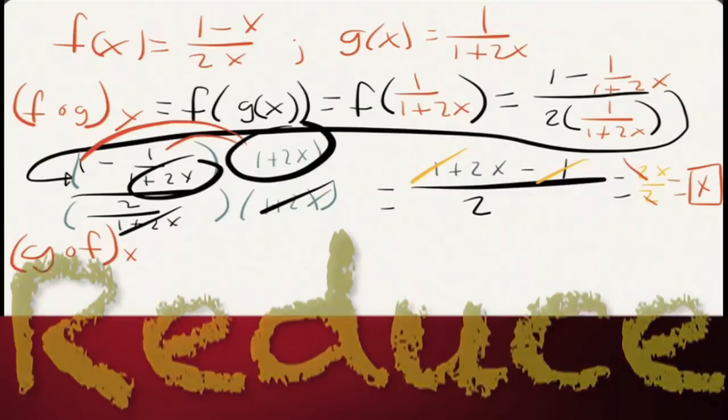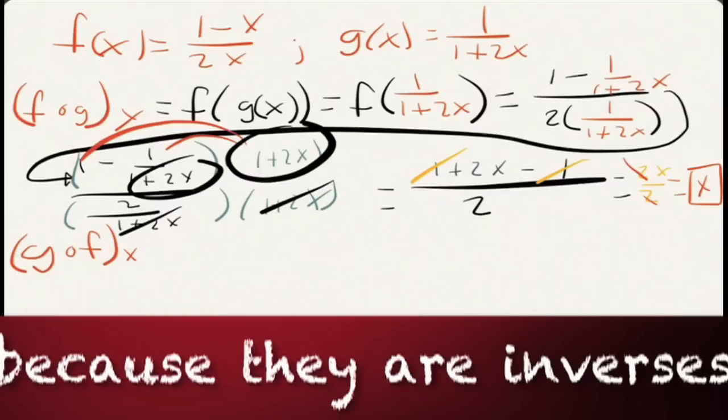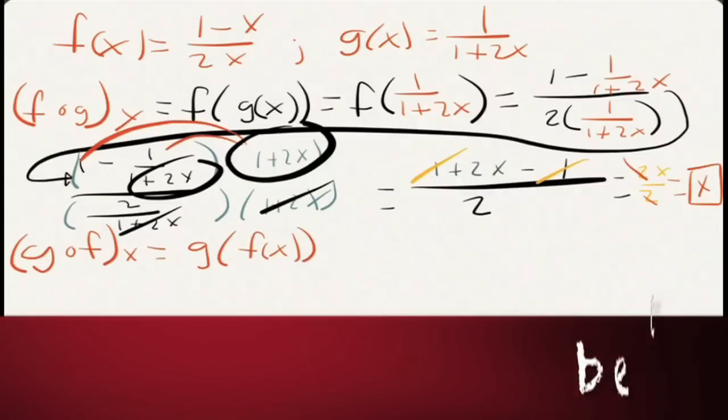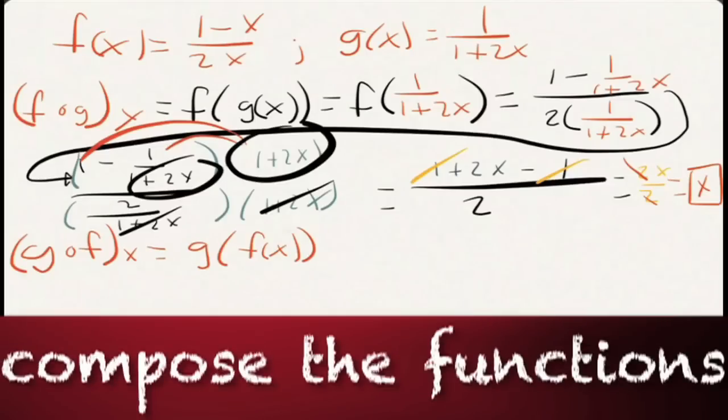Because they're inverses of each other. So now you can take that idea of inverses and know that g of f of x is also equal to x. Or you can calculate that sucker out. This is g of f of x. Because that's how that composition goes. It goes from right to left. A little backwards. That's g of 1 minus x over 2x. What's next?